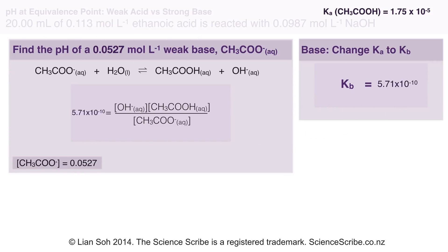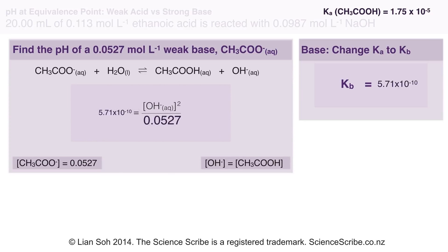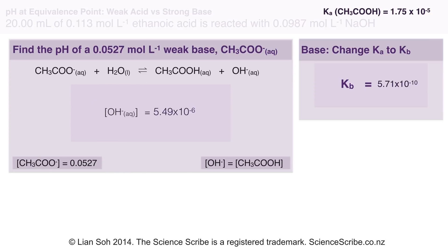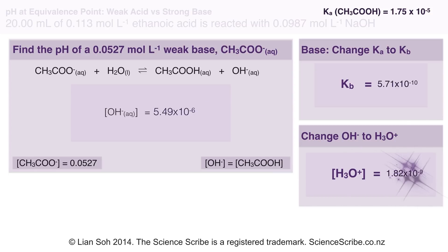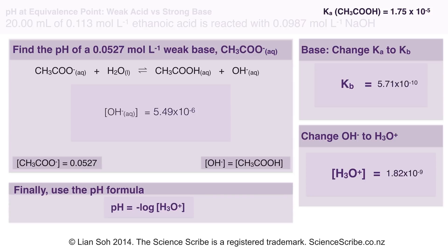We also make the standard assumptions: the original concentration of the weak base doesn't change very much, and the concentrations of hydroxide and ethanoic acid are equal since they're in a 1 to 1 ratio. I can then rearrange to find the concentration of hydroxide ions. To find pH I need the hydronium ion concentration, so I use the formula [H₃O⁺] × [OH⁻] = 10⁻¹⁴, rearranged to give [H₃O⁺] = 10⁻¹⁴ / [OH⁻]. Substituting into the pH formula gives an equivalence point pH of 8.74.